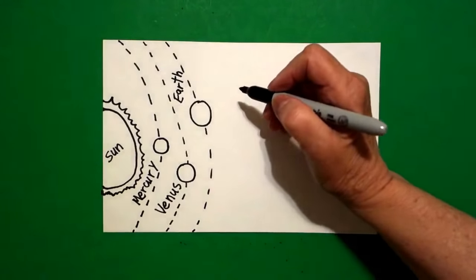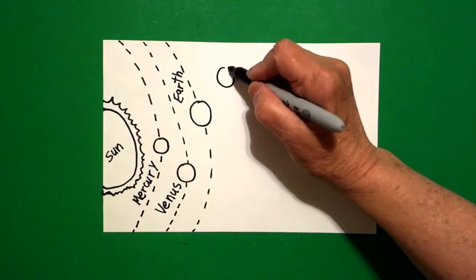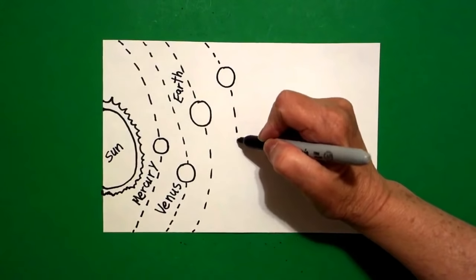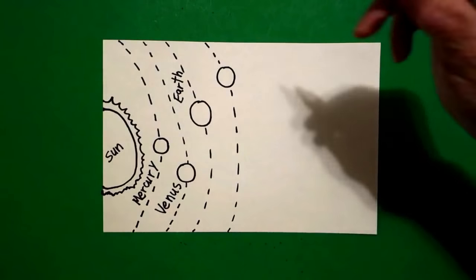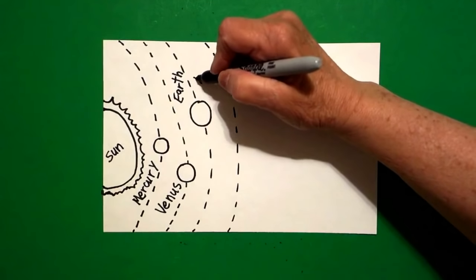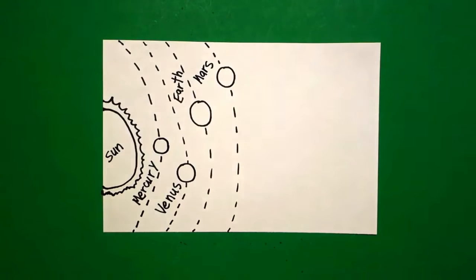Next, Mars. So I'm going to come up, draw another circle, dotted line, and we're curving it all the way down so that we know that these are the orbits of the planets. And now I'm going to write Mars. M-A-R-S.